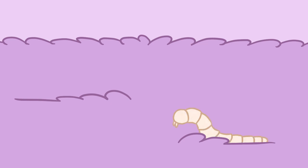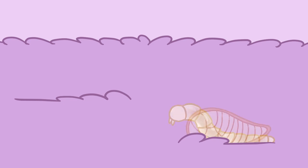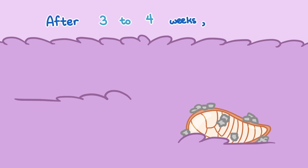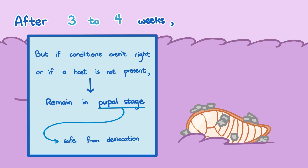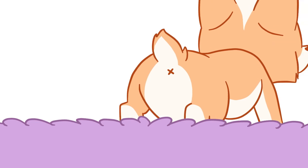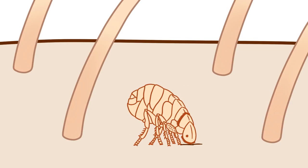They molt twice — first into the second stage larvae, and then to the third stage larvae. Then they spin a cocoon and pupate. The cocoon is very sticky, and dirt and dust often adhere to it. After about 3–4 weeks, the adult flea is ready to emerge. But if conditions aren't right or a host is not present nearby, they can remain in the pupal stage for several months, and they are also safe from desiccation at this stage. When a host is found, the adult flea jumps onto the host and takes a blood meal. It feeds repeatedly and reproduces with other adult fleas, and the cycle begins anew.